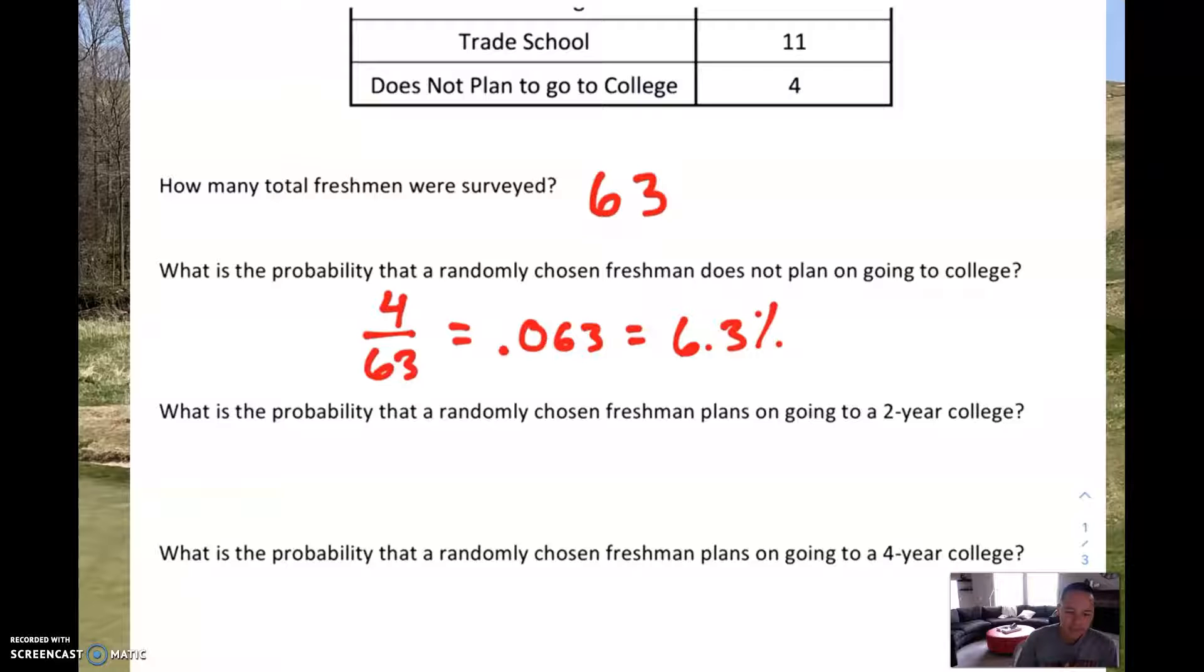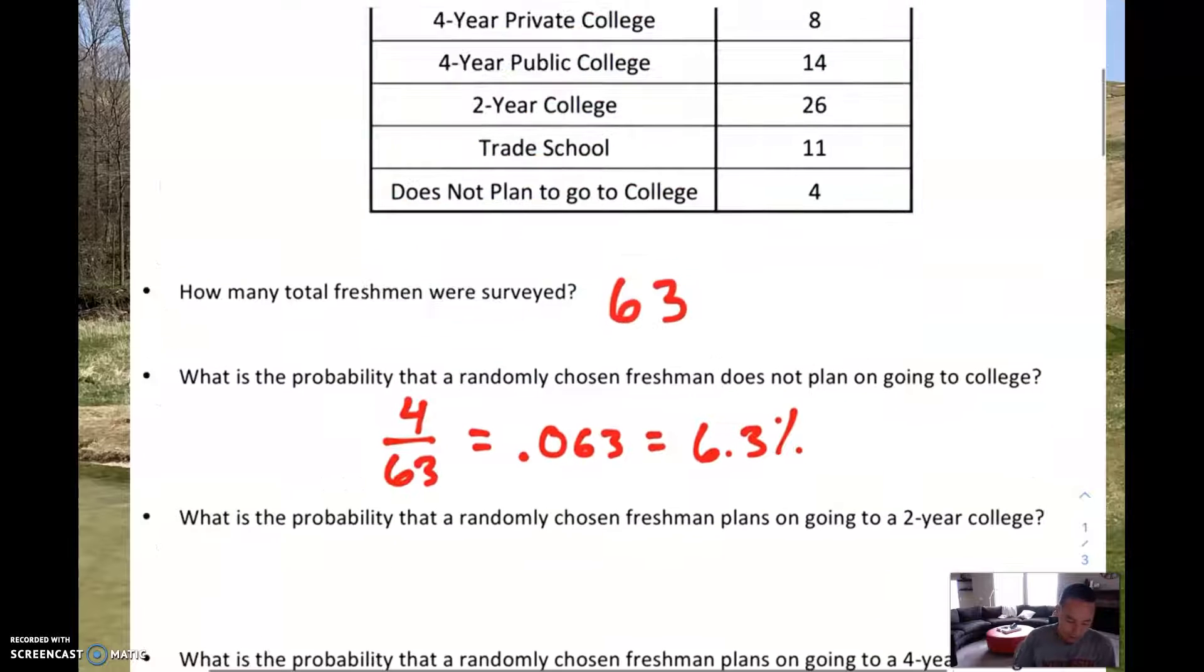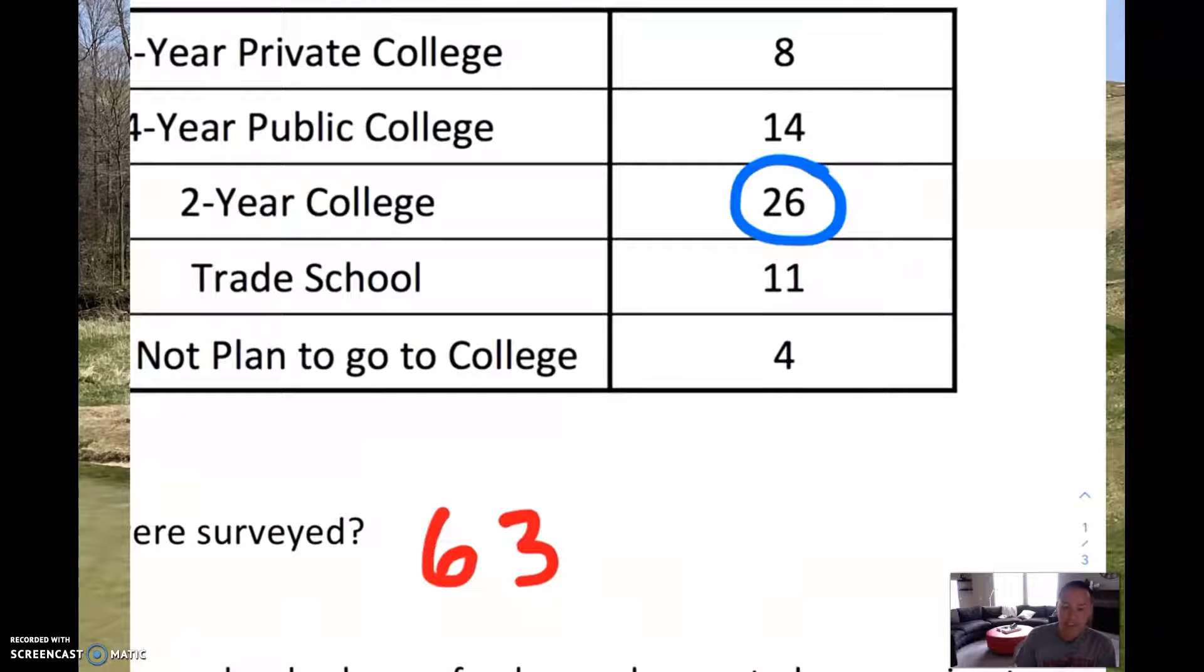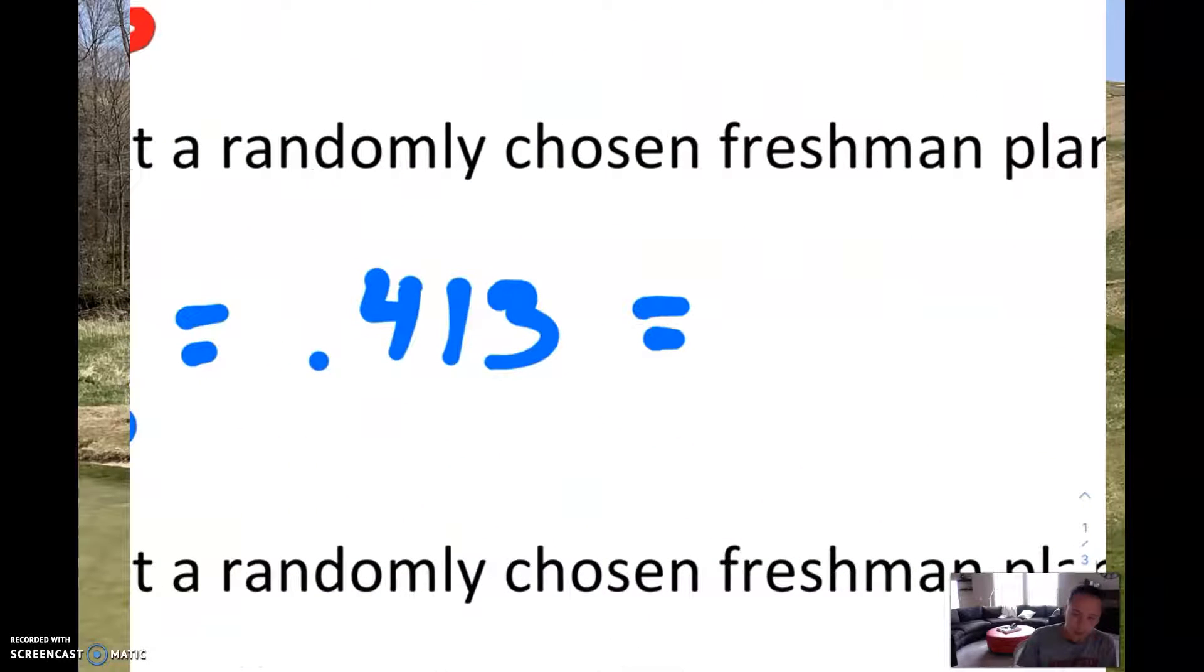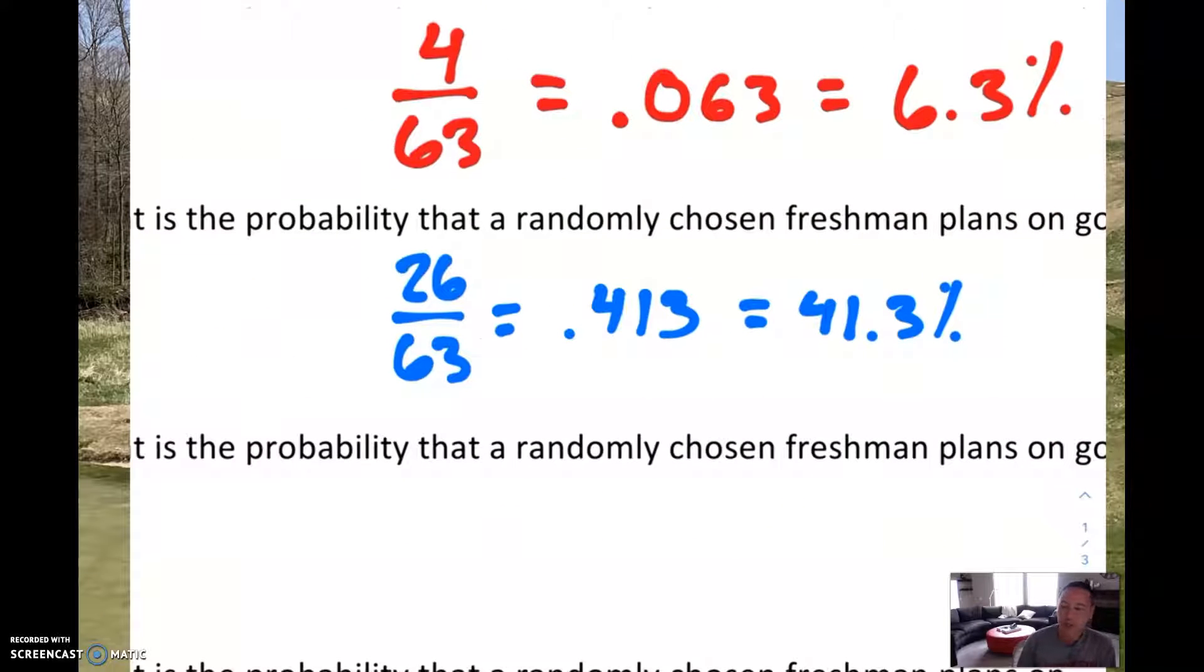The next one says, what is the probability that a randomly chosen freshman plans on going to a two-year college? If you look here, we have 26 students who said they plan on going to a two-year college. So we have 26 out of 63. We can take those and divide them. 26 out of 63 gives us 0.41, it's a 2.6, I'm going to round that up to a 3. If you convert that to a percent, this means 41.3% of freshmen that we surveyed are planning on going to a two-year college.